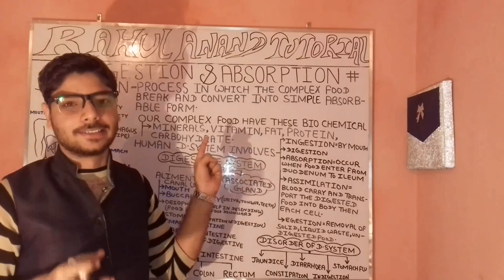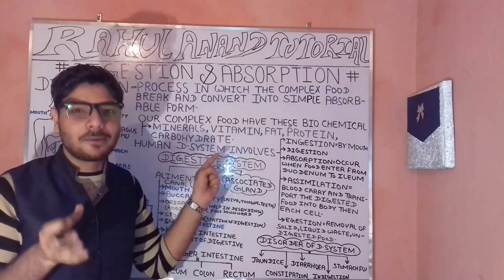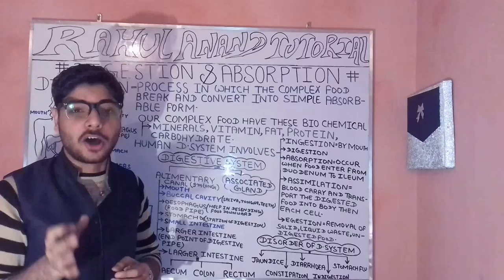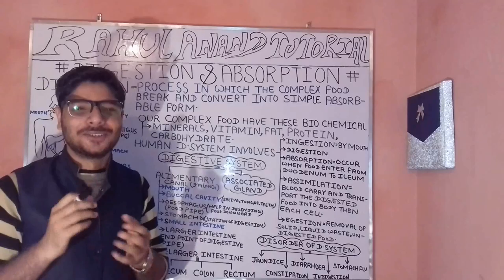So now let's understand what digestion actually is. Digestion is the process in which complex food is broken down and converted into simple, absorbable substances.